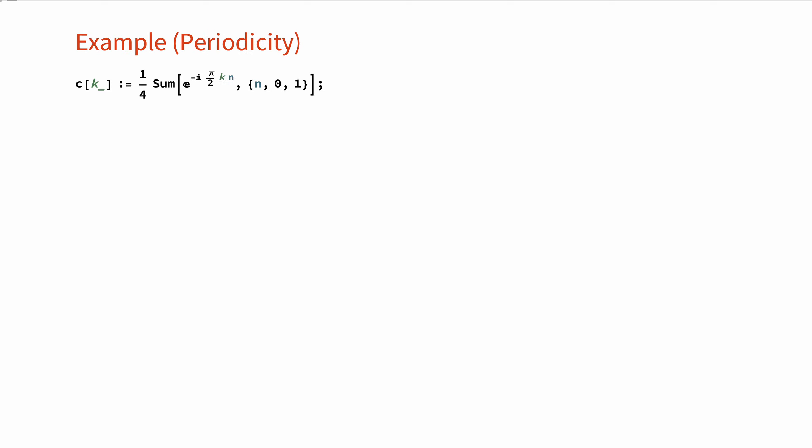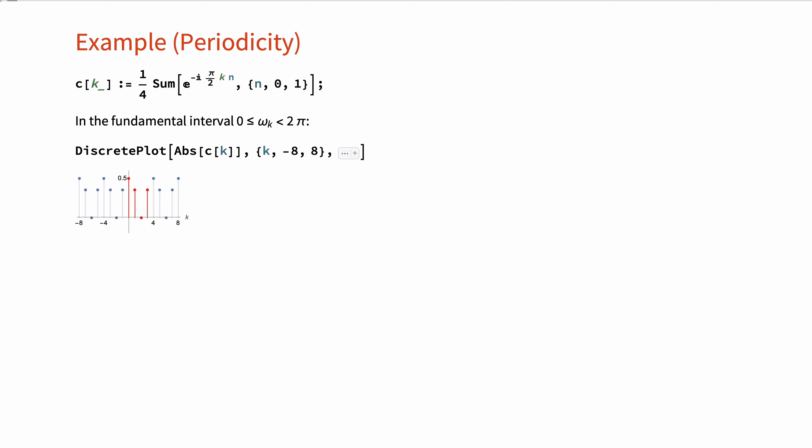We can check this property for the previous example by plotting the magnitudes of the Fourier series coefficients. Here in red, you can see the magnitudes of the four Fourier series coefficients c₀ to c₃, corresponding to frequencies in the fundamental interval ω_k between 0 and 2π.